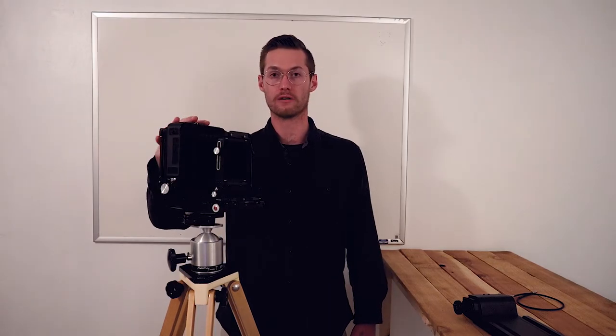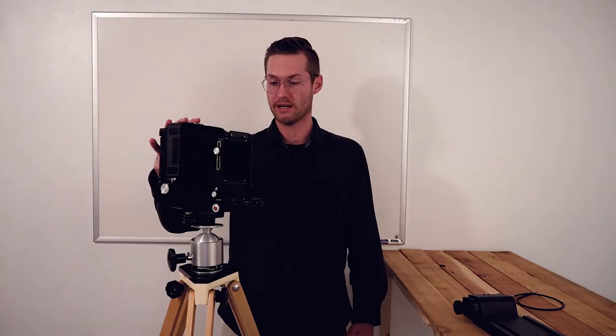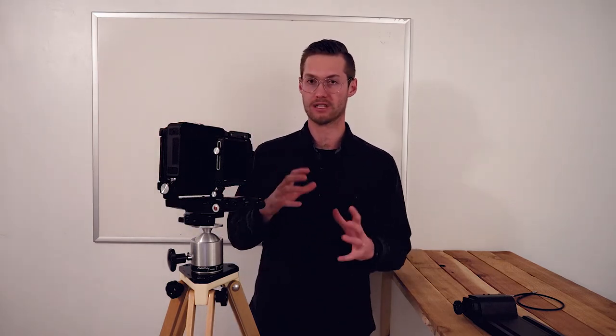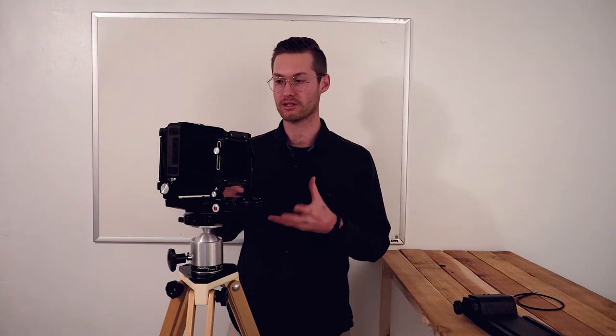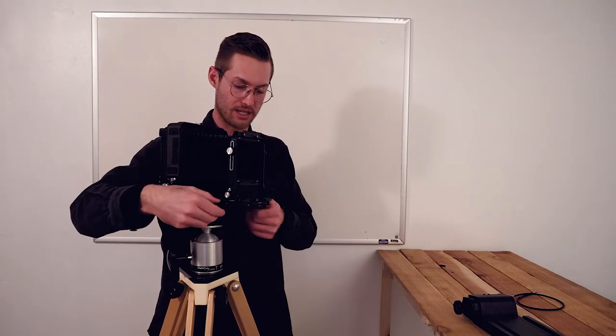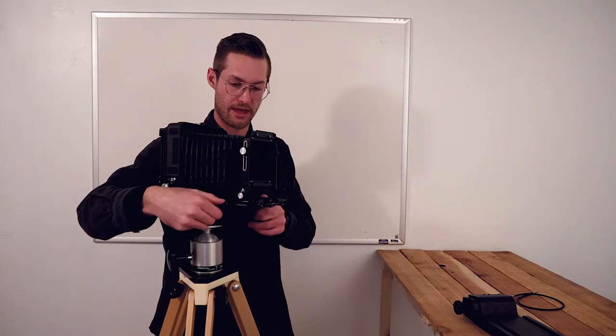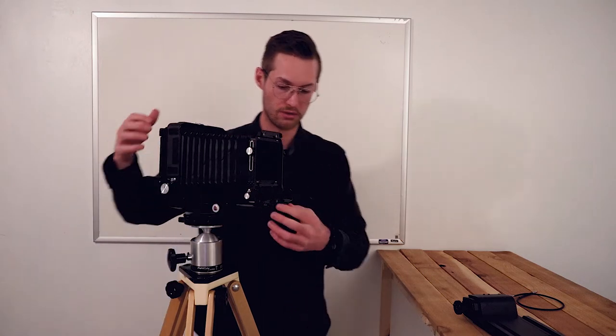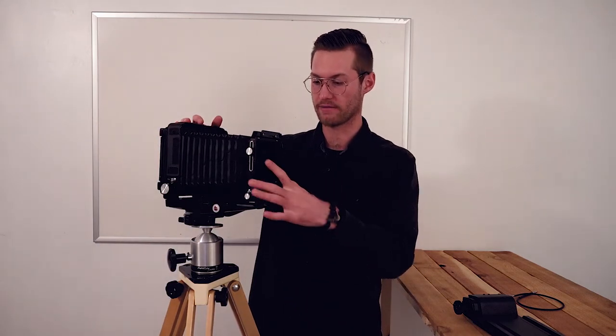So this is a Toyo field view camera. It's a classic view camera design. They call it a field camera because it folds up really small, as you can see, so that you can take it out in the field very easily. So this is a very unique special camera that is super cool.